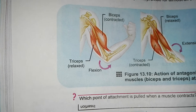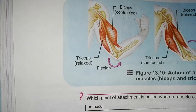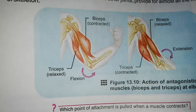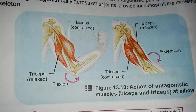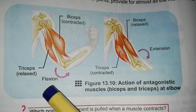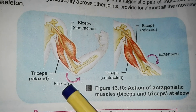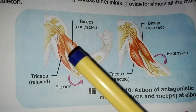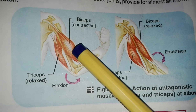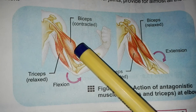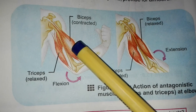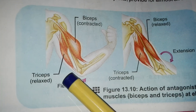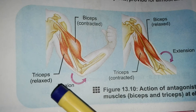Let's look at the example of antagonistic muscles — biceps and triceps — which are present at the elbow. The biceps are on the front side of the upper arm, and the triceps are on the lower/back side.